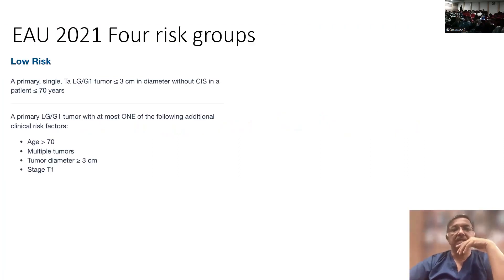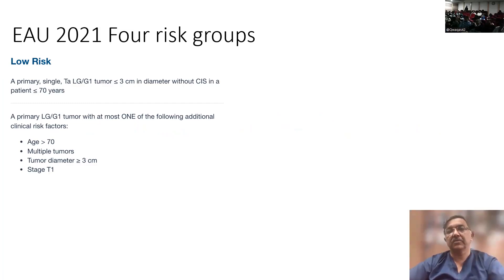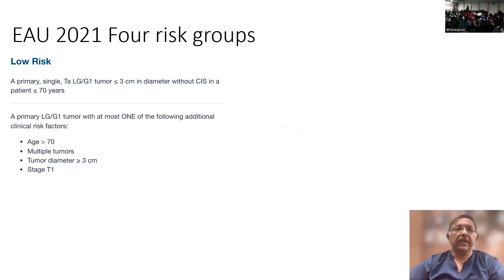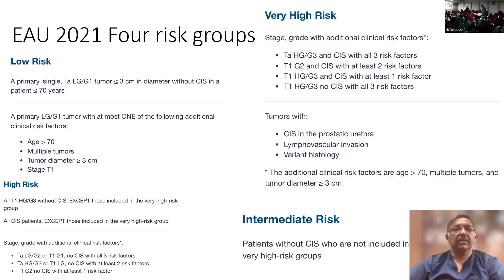The four risk categories: low risk tumor is a primary single TA low-grade tumor less than 3 centimeters without CIS in a patient younger than 70 years. If any of these parameters is not fulfilled, this becomes intermediate or high risk. A primary low-grade tumor with at most one of the following additional clinical risk features becomes high risk.